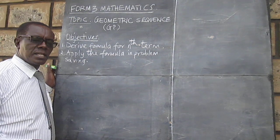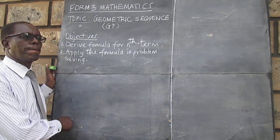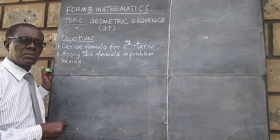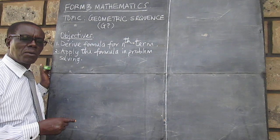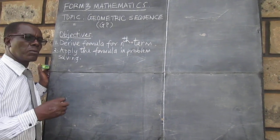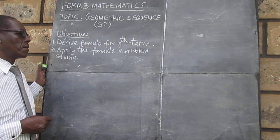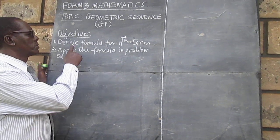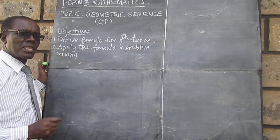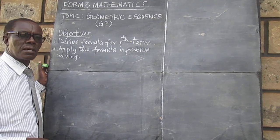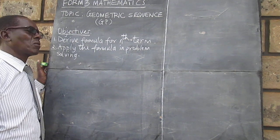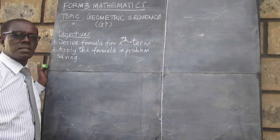In our last lesson, we looked at the nth term of an arithmetic progression. We got a formula for working out whichever term we are required to work out. We would like now to obtain a formula for getting the nth term, but this time not of AP, but for GP — geometric progression, or what we sometimes call the geometric sequence.